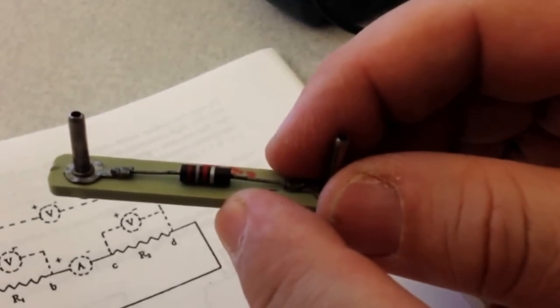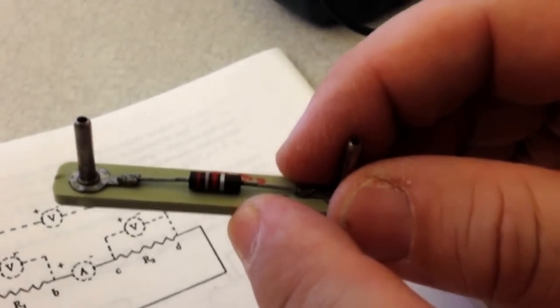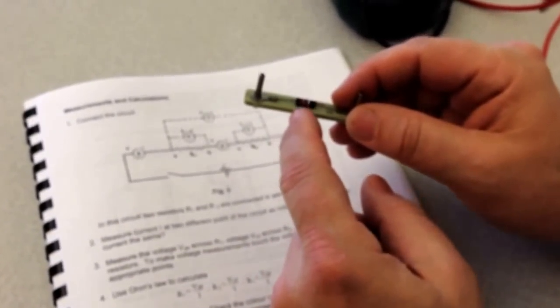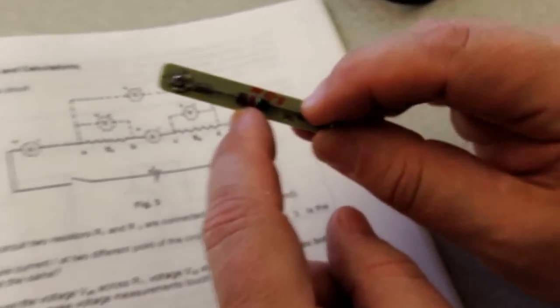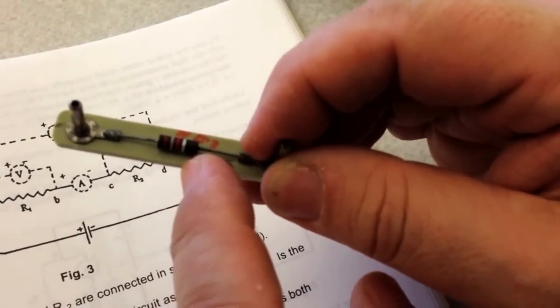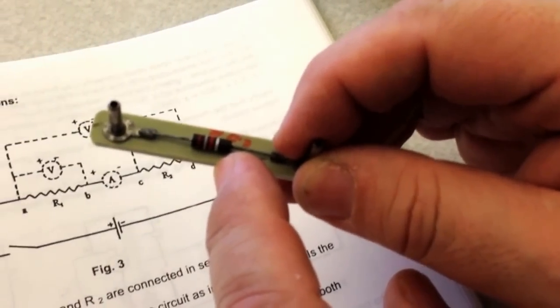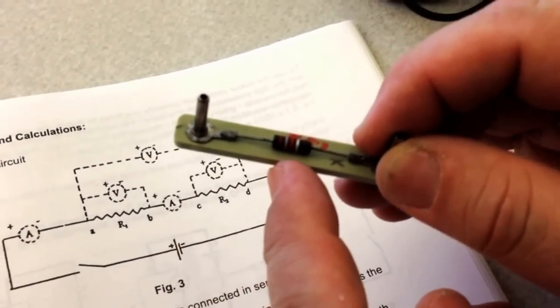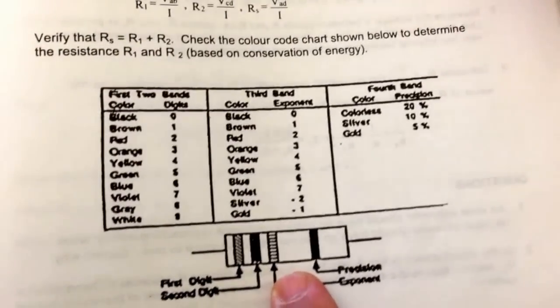If you take one of these resistors, you will notice that it has color code bands. There's a total of four color code bands on this resistor. Starting closest to the edge of the resistor, we see the colors are red, violet, red, and silver. Usually the fourth band is a metallic color, either silver or gold. Now, what do these color code bands correspond to?